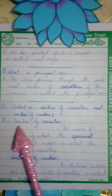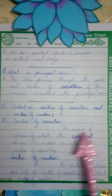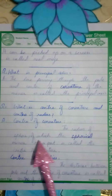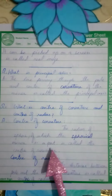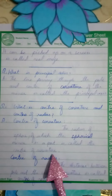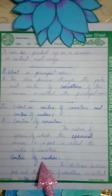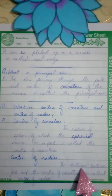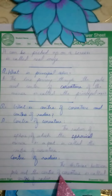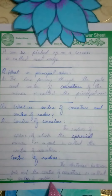Question number four: What is center of curvature and radius of curvature? The radius of the sphere of which the spherical mirror is a part is called the center of curvature. The distance between the pole and the center of curvature is called the radius of curvature.